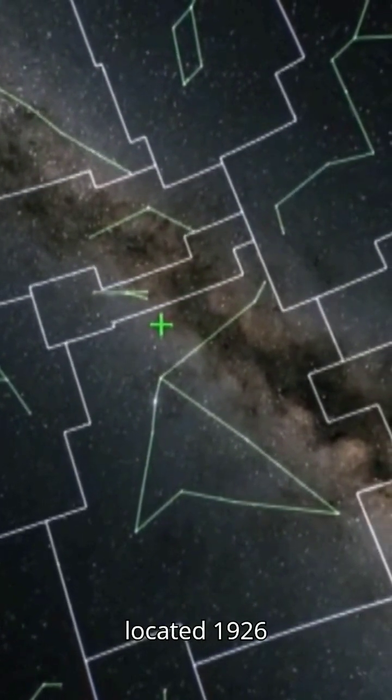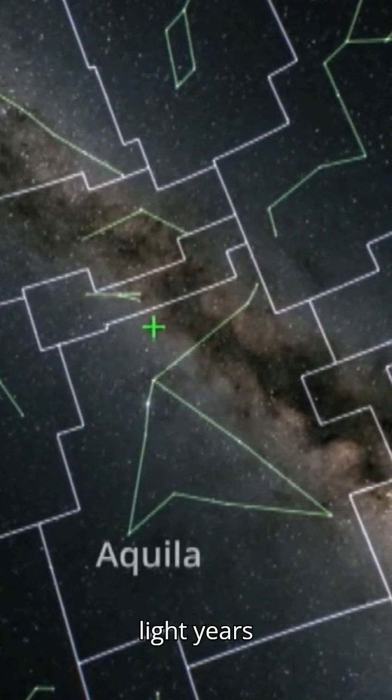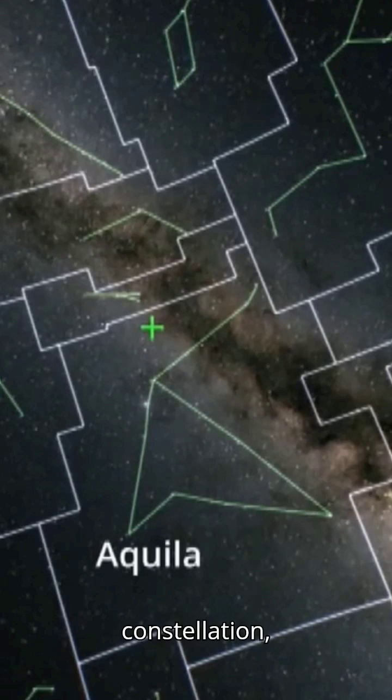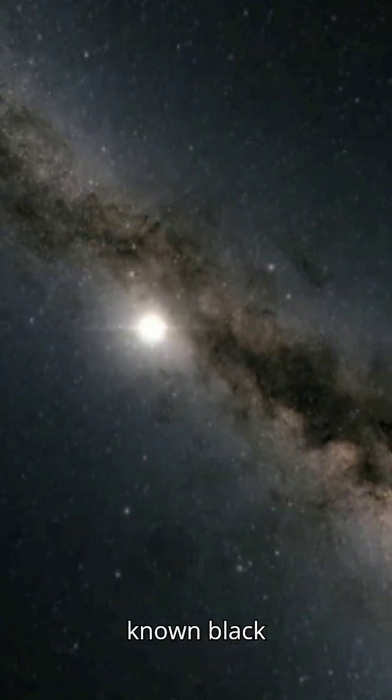This black hole is located 1,926 light-years away in the Aquila constellation, making it the second-closest-known black hole to Earth.